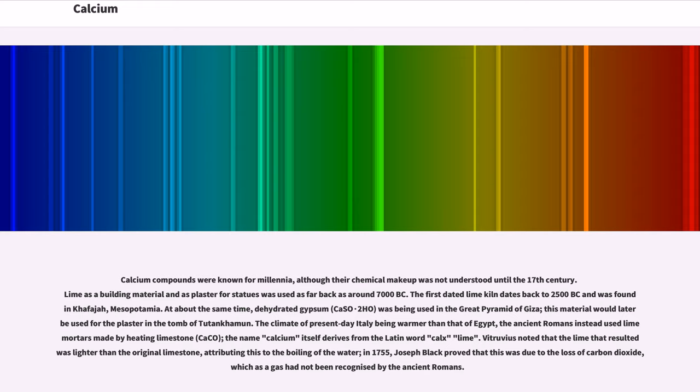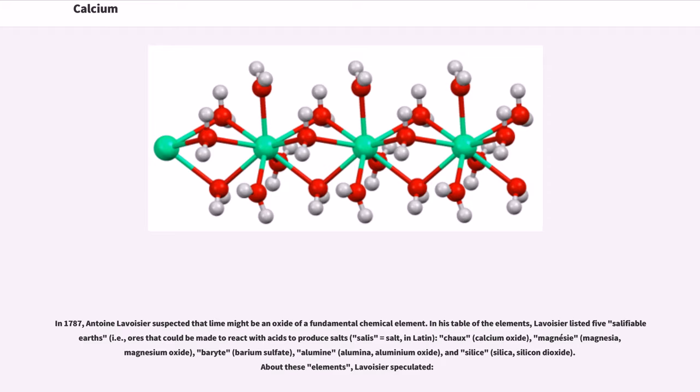The climate of present Italy being warmer than that of Egypt, the ancient Romans instead used lime mortars made by heating limestone CaCO₃. The name calcium itself derives from the Latin word calx, lime. Vitruvius noted that the lime that resulted was lighter than the original limestone, attributing this to the boiling of the water. In 1755, Joseph Black proved that this was due to the loss of carbon dioxide, which as a gas had not been recognized by the ancient Romans. In 1787, Antoine Lavoisier suspected that lime might be an oxide of a fundamental chemical element.